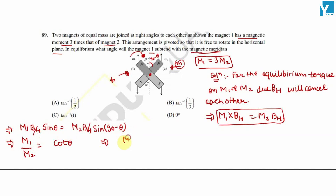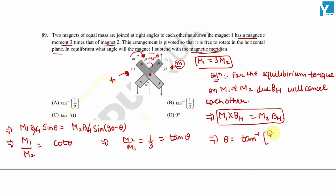M2 divided by M1 equals 1 divided by 3, which equals tan(theta). Therefore theta equals tan inverse of 1 by 3. Looking at the options, option B is the right answer.